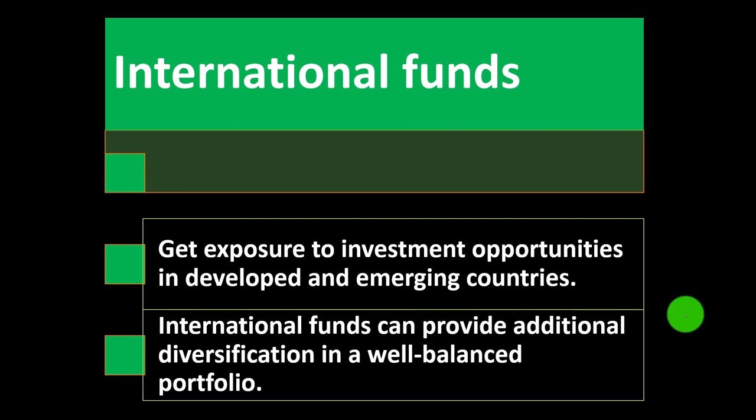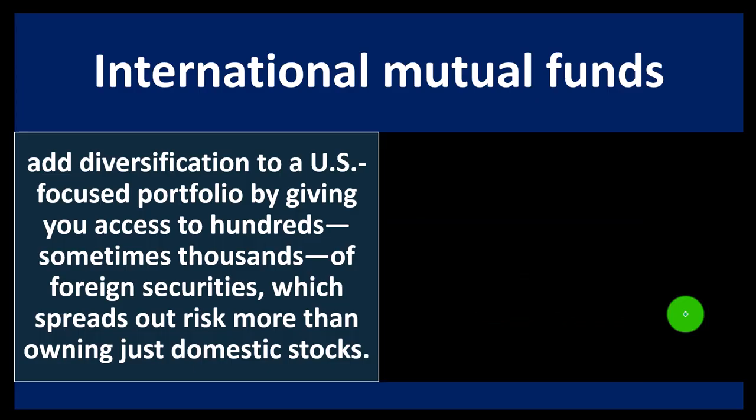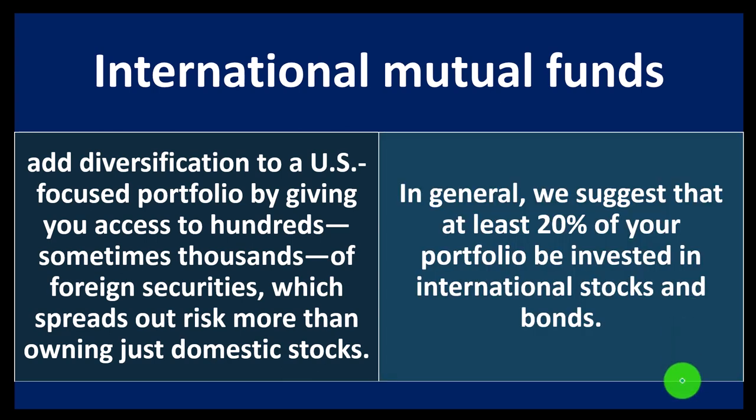International funds can provide additional diversification in a well-balanced portfolio. International mutual funds add diversification to a U.S.-focused portfolio by giving you access to hundreds — sometimes thousands — of foreign securities, which spread out risk more than owning just domestic stocks. In general, Vanguard suggests that at least 20% of your portfolio be invested in international stocks and bonds.